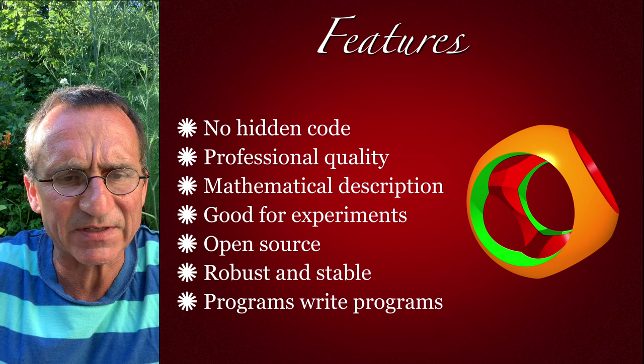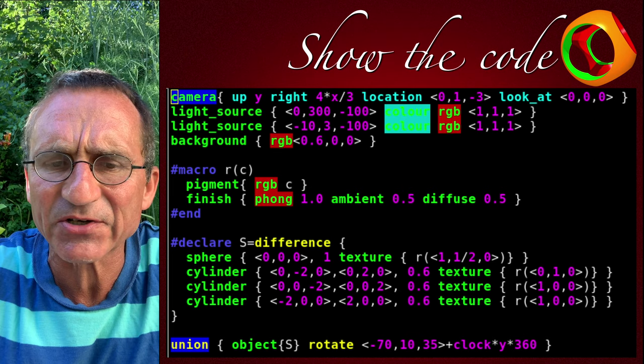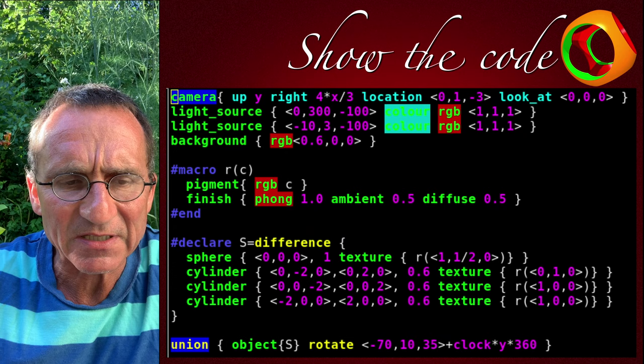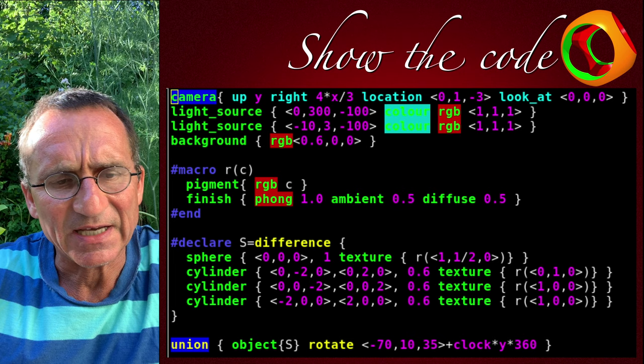Here's the code which renders the solid shown. First, the camera parameters are described: where the camera is, where it looks from, where it looks at. Then there are some light sources — two light sources here — and the background color. There is a macro for a pigment and a texture, and then it comes to geometry. We take a sphere and cut out three cylinders — take away three cylinders — and then the whole thing is shown and rotated.